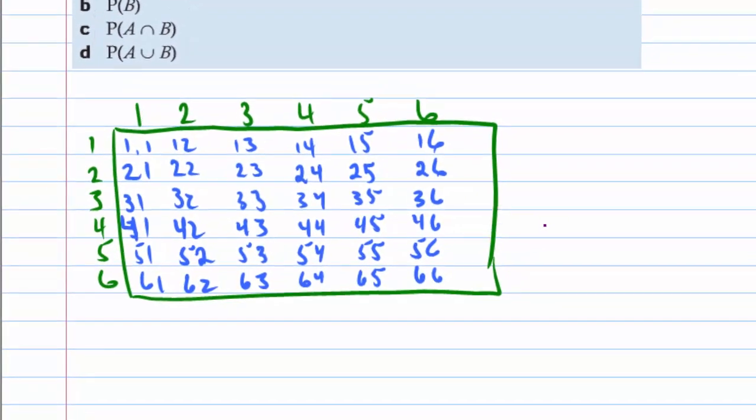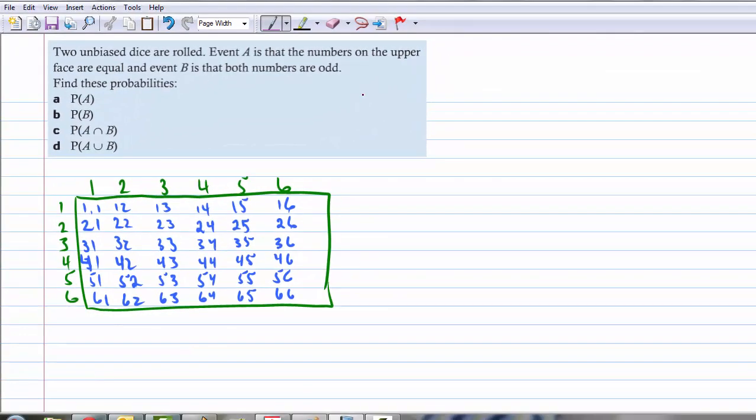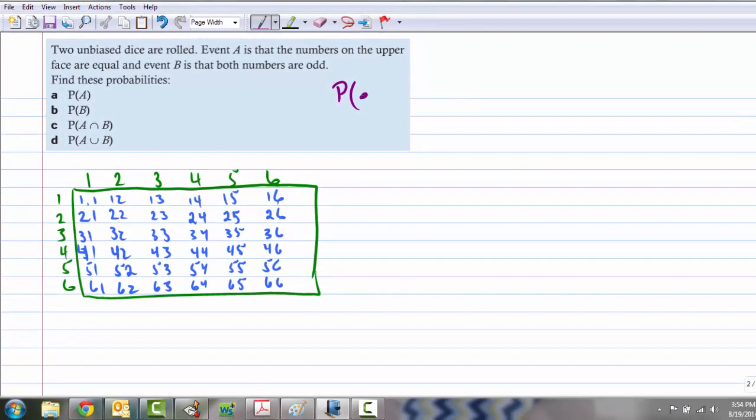Okay, so probability of A. Well, what is event A? That's where we're looking at probability that equal values. Sometimes it's useful to actually write down the words that mean event A. So which ones are those? Sometimes a highlighter comes in handy. There are six of them. So our probability of this, probability is defined as being the number of successes divided by the number of possible outcomes. Well, how many possible outcomes are there here? There are 36 things in our sample space. And how many of them are a success? That is, how many of them are the numbers equal? There are six. So six out of 36 is our probability, and we should reduce this to one-sixth.